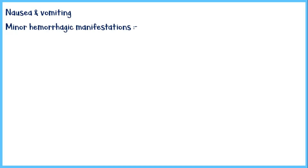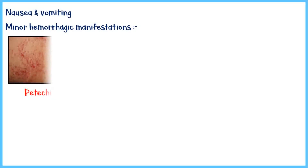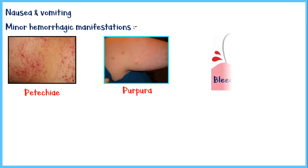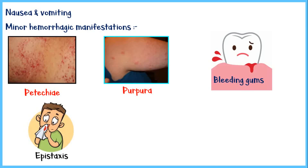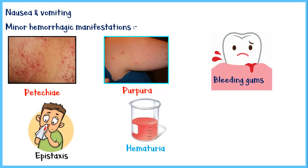The patient may also present with nausea and vomiting, and mild hemorrhagic manifestations such as petechiae, purpura, bleeding gums, epistaxis or bleeding from the nose, and hematuria or blood in urine. A tourniquet test is positive in most patients.